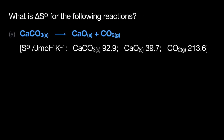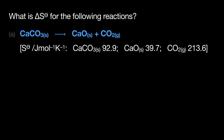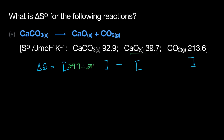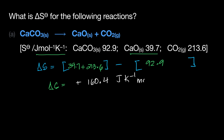Another example: find delta S for a decomposition reaction. Using products minus reactants: calcium oxide is 39.7 and carbon dioxide is 213.6, giving total product entropy, minus calcium carbonate at 92.9 for the reactant. There are no multipliers here, so just add and subtract. The value turns out to be positive — 160.4 joules per Kelvin per mole.